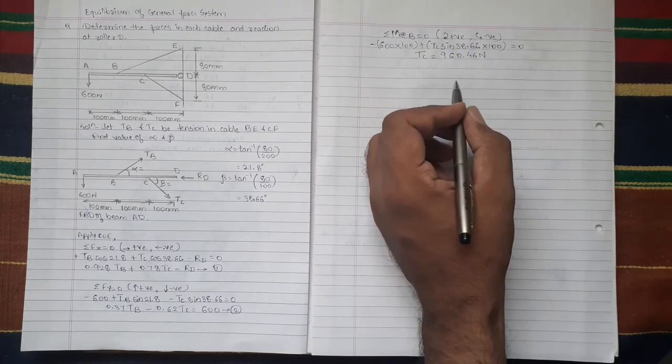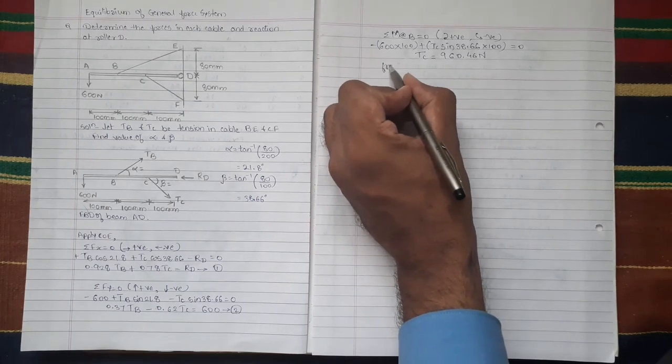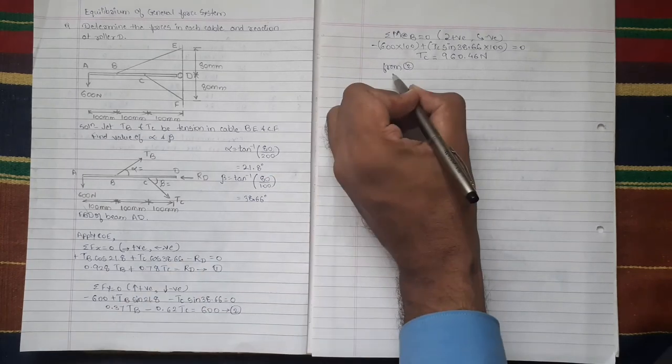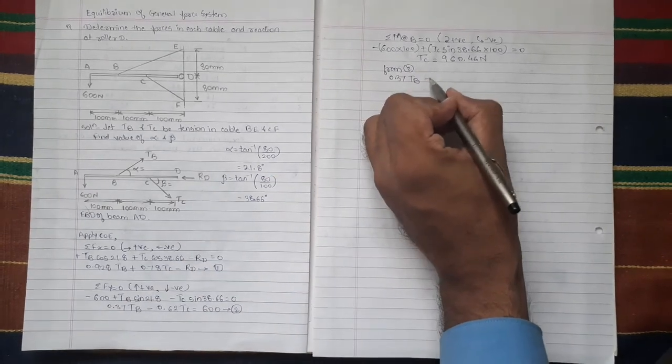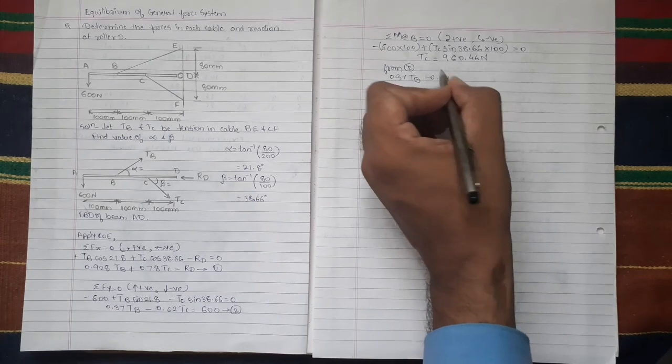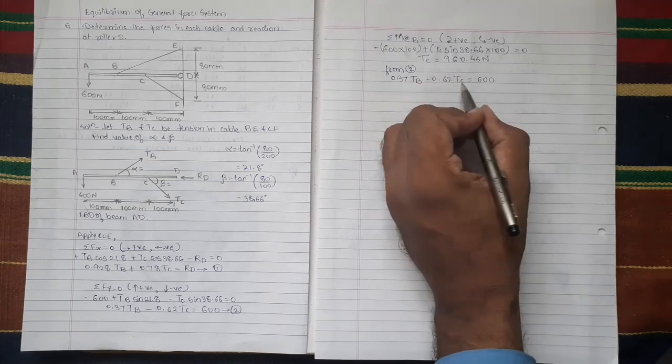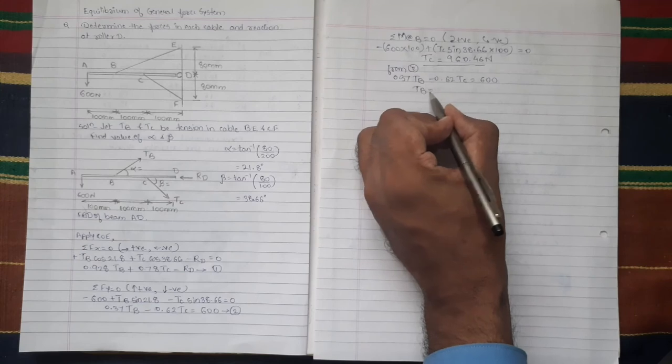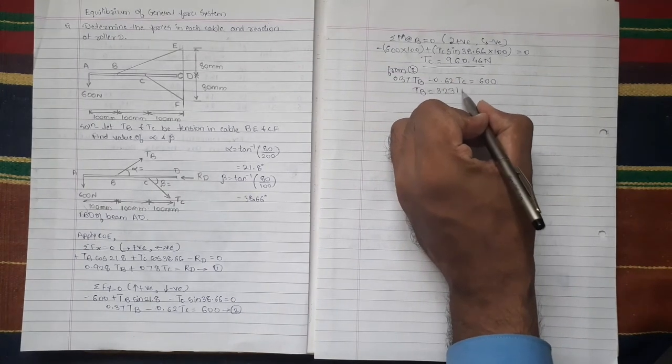Now from equation 2, we will get value of TB. So from equation 2, 0.37 TB minus 0.62 TC equal to 600. So if we will put value of TC which we calculated here, we will get value of TB equals to 3231 Newton.